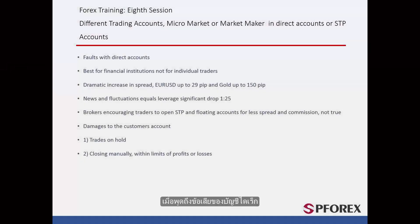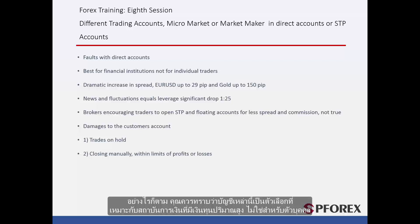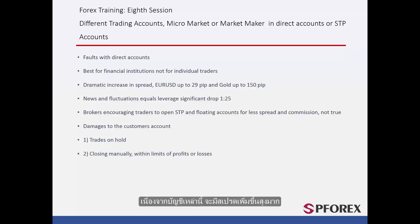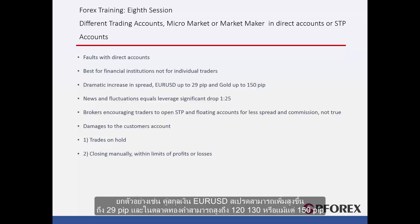Now let's talk about the disadvantages of the direct accounts. Brokers usually advertise heavily on these types of accounts and encourage customers to open floating and especially ECN accounts. However, you should know that these accounts are usually a good choice for financial institutions with a huge amount of capital, not for individual parties. This is because these accounts usually include a dramatic increase in spread — not like floating accounts in which spread can only be widened to a certain value. For instance, in Euro against US Dollar it can go up to 29 pips, and in the Gold market it can go up to 120, 130 or even 150 pips.